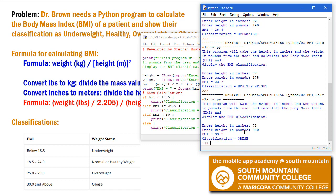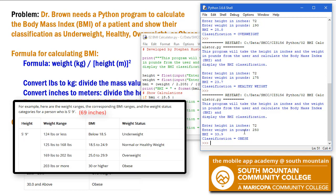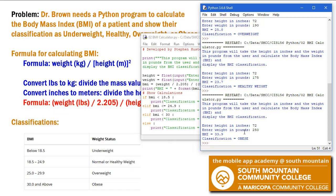You might want to find a chart online of a height and what the BMI's and classifications are for different weights and just test against that. But I'm going to say right now this program seems to be working. And you've seen how we've used an if, elif, else structure in providing four different forks for the classification output.